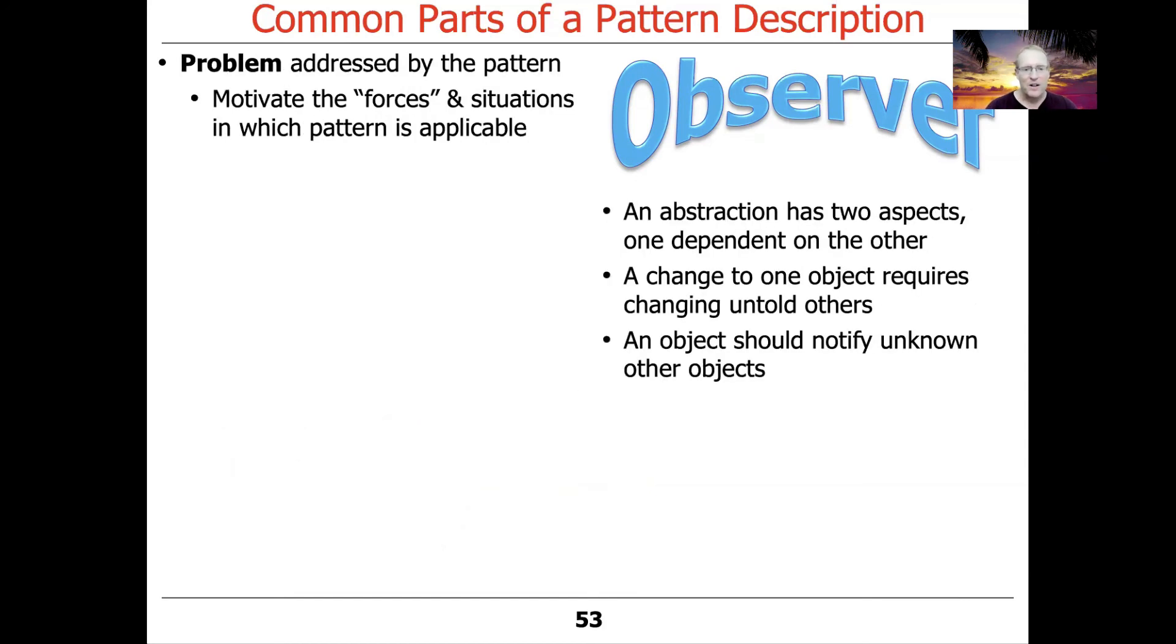The next part, which goes by different names, either applicability or forces or problem, is really saying, when should you apply this pattern? What are the design forces that need to be thought about in order to apply this pattern? In the case of the observer pattern, the applicability or forces are that an abstraction has two aspects, one depending on the other. A change to one object requires changing some untold number of others, because there can be multiple observers, and an object should notify an unknown number of other objects. They don't need to know specifically what the objects are, and the objects that are being notified don't necessarily even need to know who the subject is. If those conditions hold, if those are the forces that have to be resolved, then you could consider applying the observer pattern.